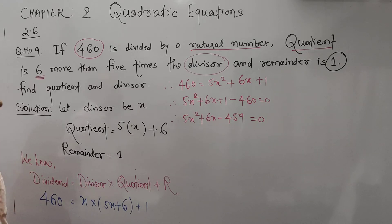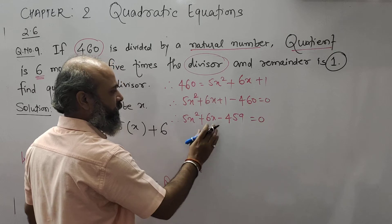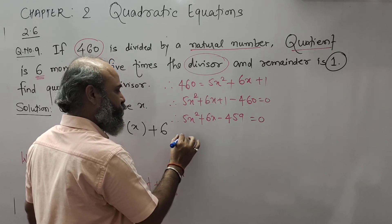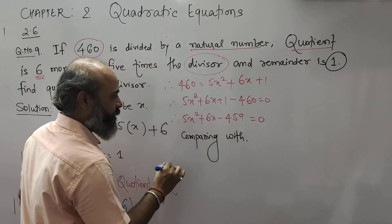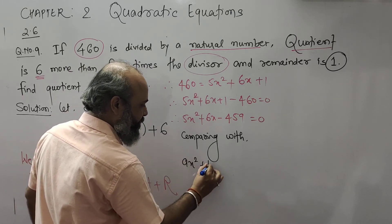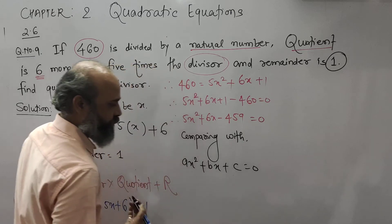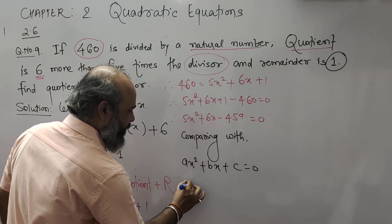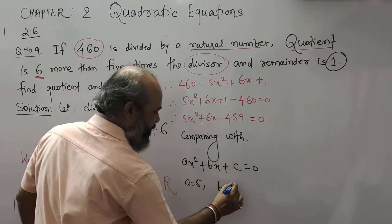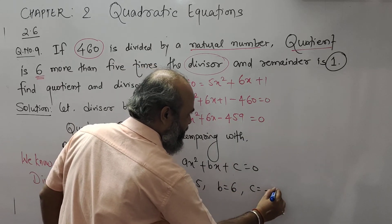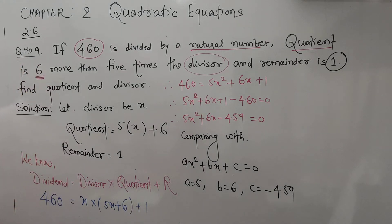Comparing with the standard form ax² + bx + c = 0: what is a? a is 5. What is b? b is 6. And what is c? c is minus 459.